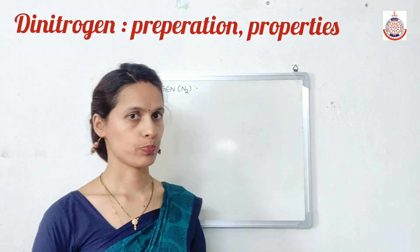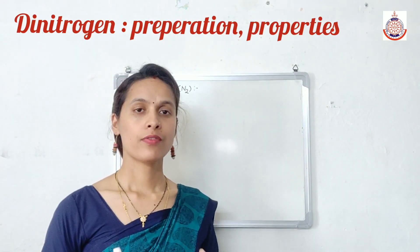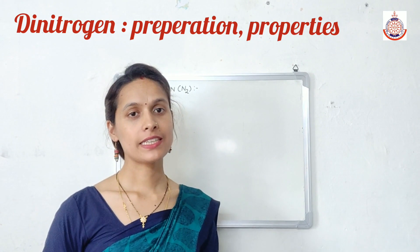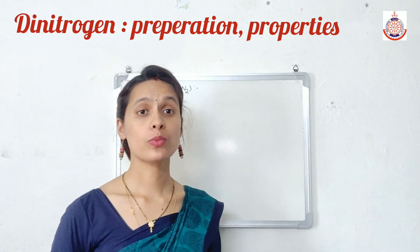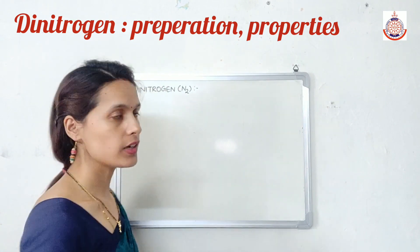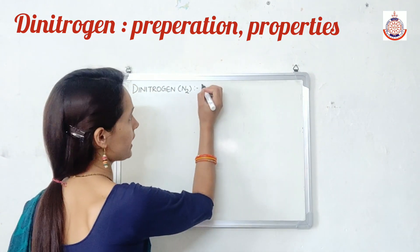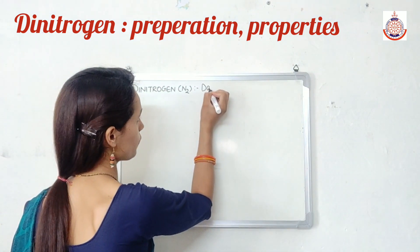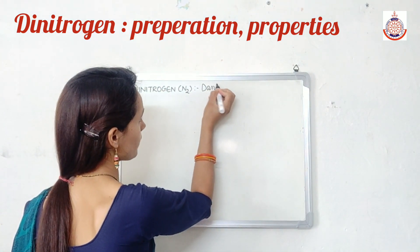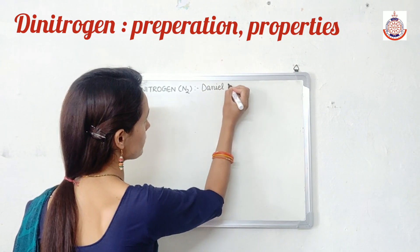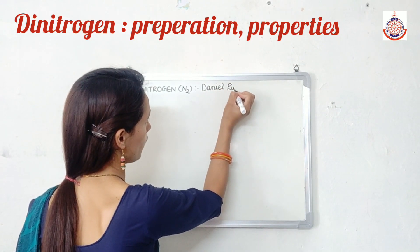Dinitrogen means N2. Dinitrogen was discovered by Daniel Rutherford in 1772.